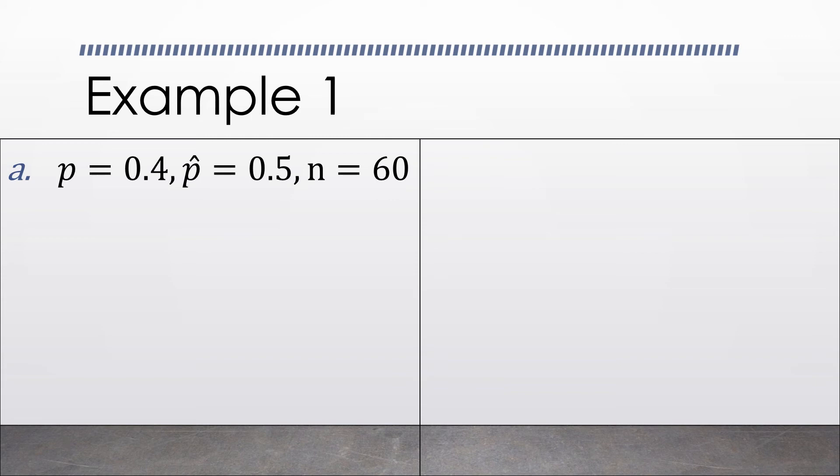Now, let us compute the first example. z equals—the formula is p-hat minus hypothesized proportion. I just removed the zero subscript, but it is just the same.